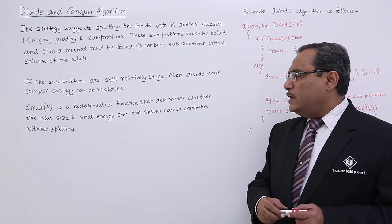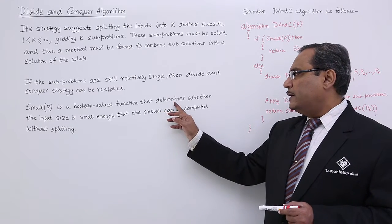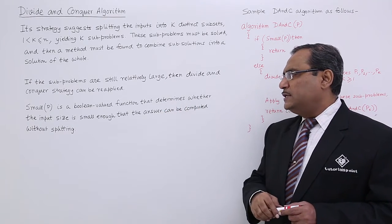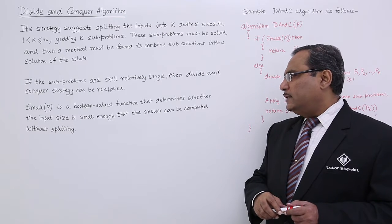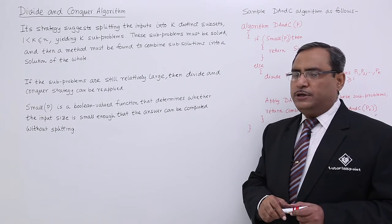Small p is a Boolean valued function that determines whether the input size is small enough that the answer can be computed without further splitting.